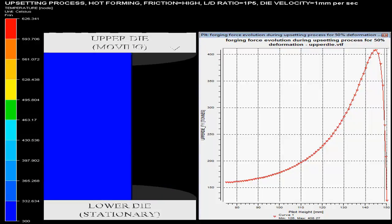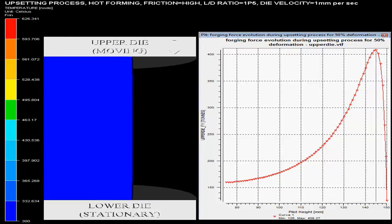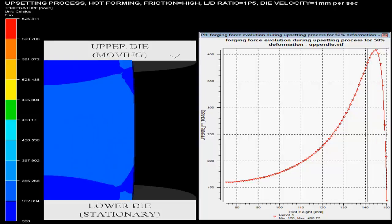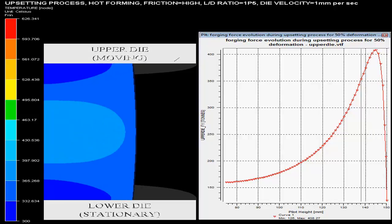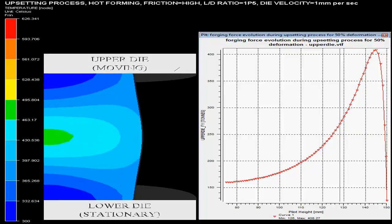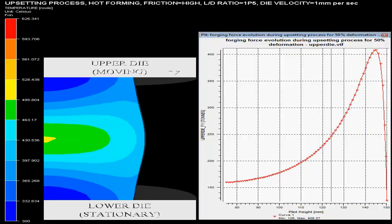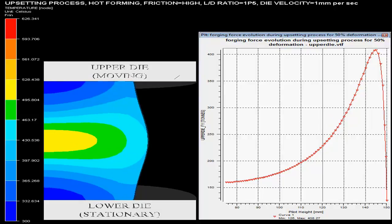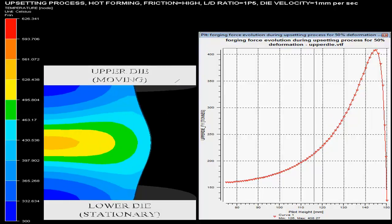Here the hot upsetting process for titanium billet is shown. The length by diameter or L by D ratio of the billet is 1.5 and the friction involved in the upsetting process is high. The reduction produced after forging is 50% and the press used is hydraulic press.